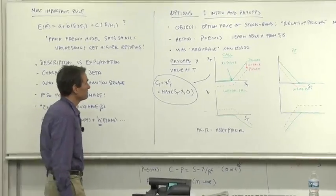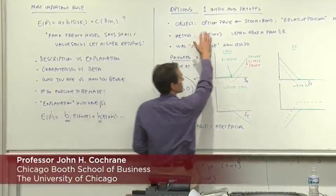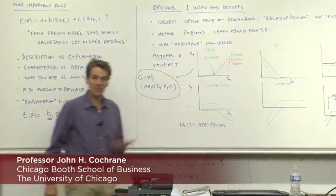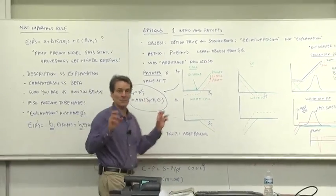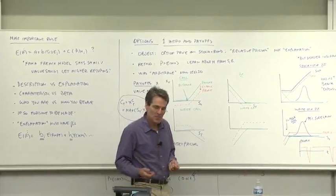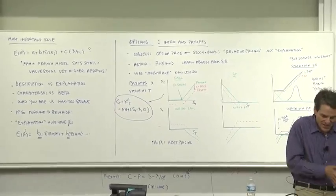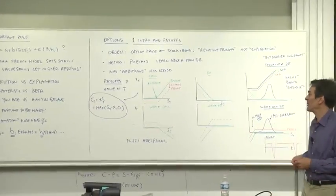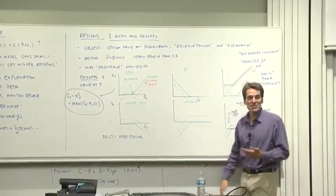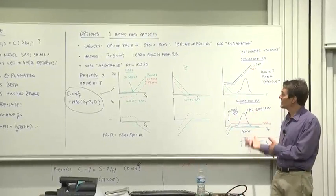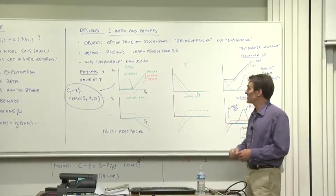We're going to talk about options. The objective is to understand an option price in terms of the stock and bond price. This is pure relative pricing, not explanation. As you saw, most of the uses of the Fama-French model were relative pricing — understanding some new thing given the HML premium. This is going to be a pure version of that. Most applications of finance are pricing one thing in terms of other things rather than deep arguments about rational versus behavioral.